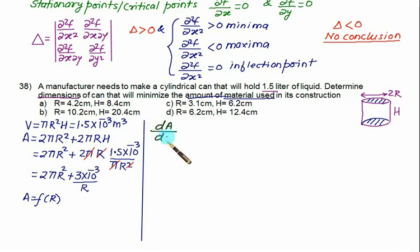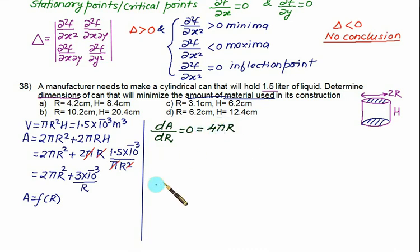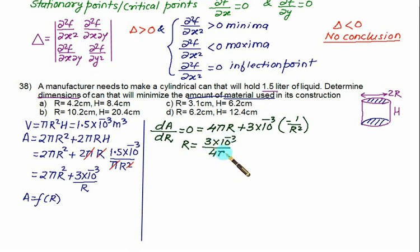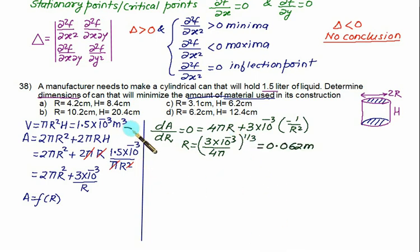Setting dA/dr = 0: the derivative of the first term is 4πr, and the derivative of the second term is −(3 × 10⁻³)/r² = 0. Solving for r gives r³ = (3 × 10⁻³)/(4π). Taking the cube root, we get r ≈ 0.062 meters.